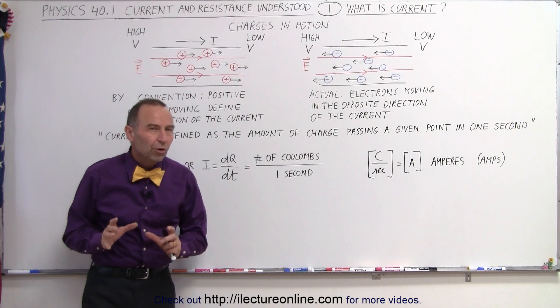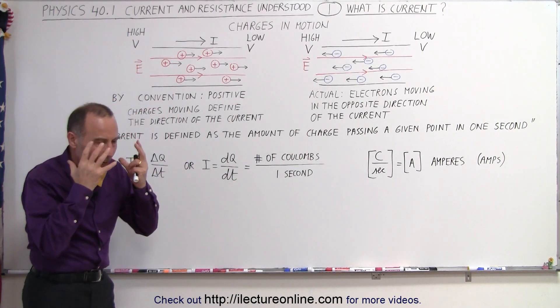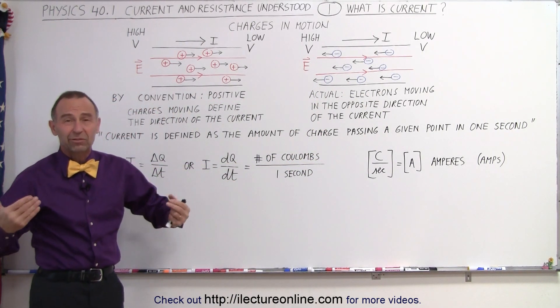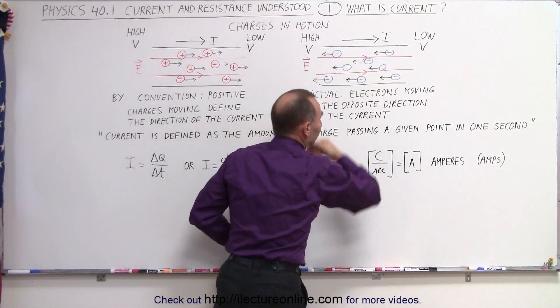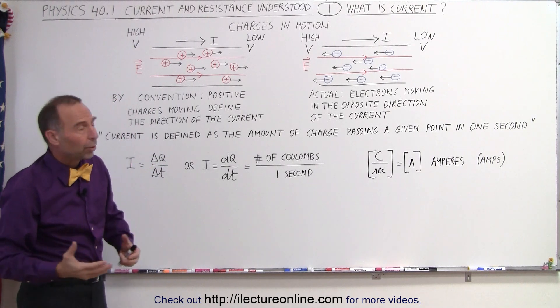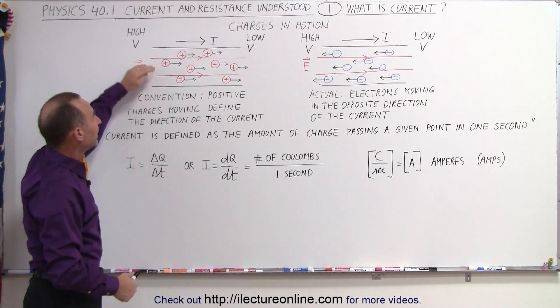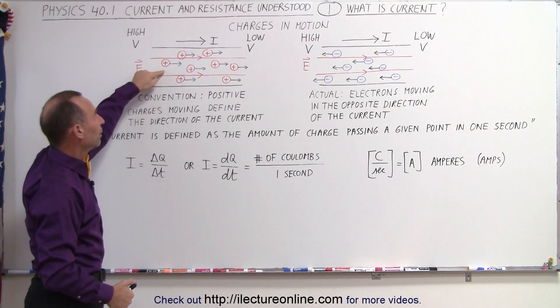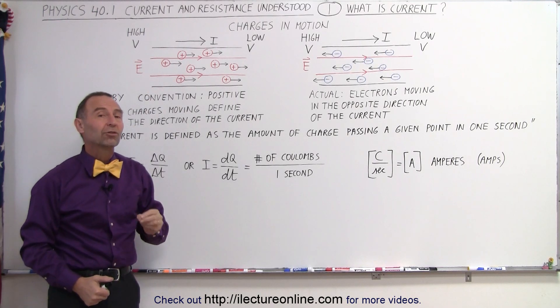It causes some confusion initially, because we were kind of stuck with the idea, well, since it's electrons moving, why don't we just take that as the direction of the current? But we just simply stuck to the convention. All books, all material will indicate that this is the direction of the current flow, and we assume that it's positive charges that are moving.